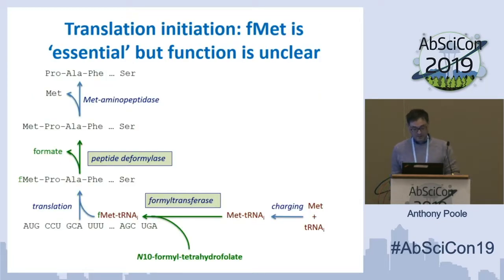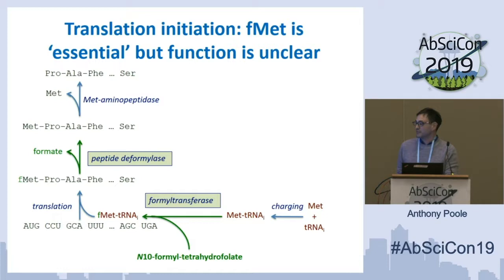For translation initiation, one of the things that we thought was puzzling as biologists is that bacteria use this formylation process. Everybody charges their tRNAs — so you get a charged tRNA. In bacteria, you have a couple of extra steps you don't find in Archaea or eukaryotes. The first is addition of the formyl group through an enzyme called formyl transferase. Translation then proceeds, and as the growing peptide comes out of the ribosome exit site, another enzyme, peptide deformylase, comes along and removes that formate group again.